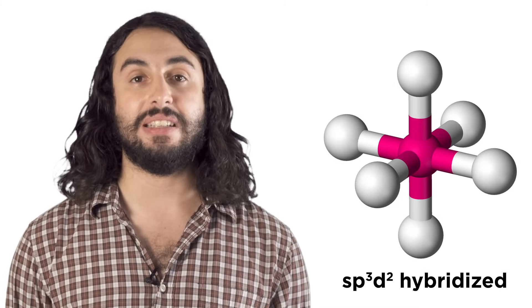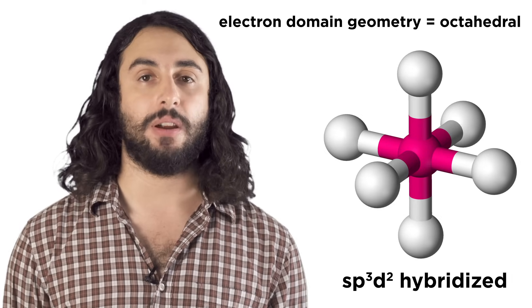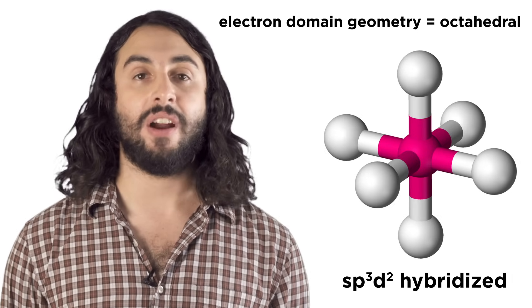And atoms with six electron domains are sp3d2 hybridized and have octahedral geometry, resembling an eight-sided figure. All the bond angles here are 90 degrees.